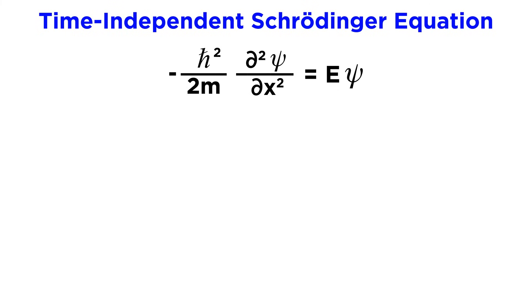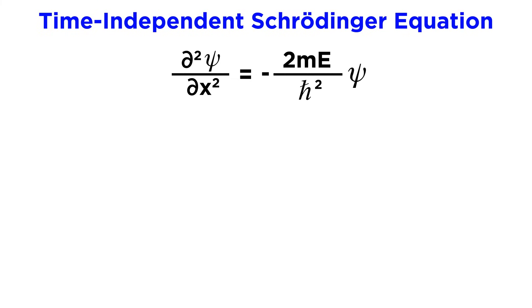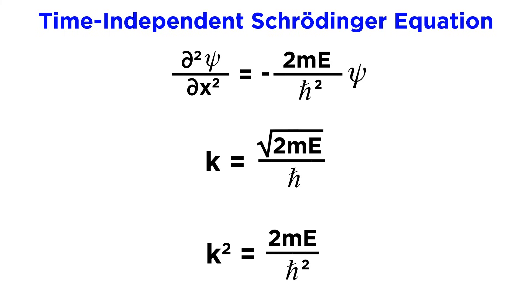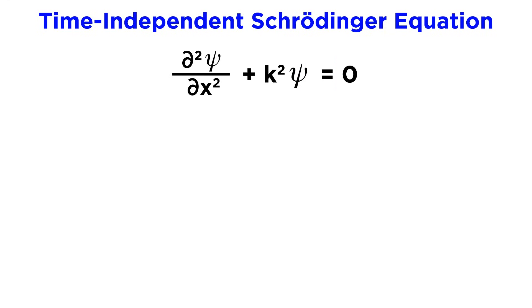Let's use the time-independent form of the equation. Isolating the partial derivative by multiplying both sides by negative 2m over h-bar squared gives us the second derivative of psi with respect to x equal to negative 2mE over h-bar squared times psi. We define k as the square root of 2mE over h-bar, so k squared equals 2mE over h-bar squared. Substituting, we get the second derivative of psi plus k squared psi equals zero.